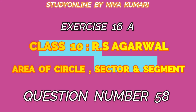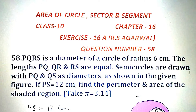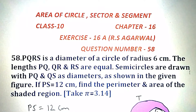Hello students, welcome to my channel Study Online. In this video I will do exercise 16A, question number 58. PQRS is a diameter of a circle of radius 6 centimeters. The lengths PQ, QR and RS are equal. Semicircles are drawn with PQ and QS as diameters, as shown in the given figure. If PS is equal to 12 centimeters, find the perimeter and the area of the shaded region.